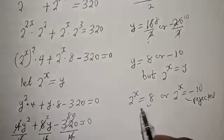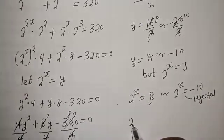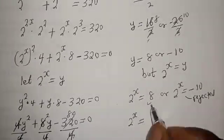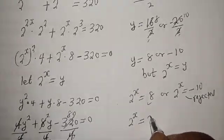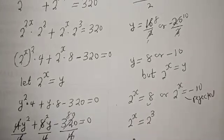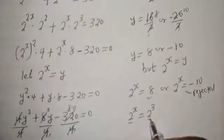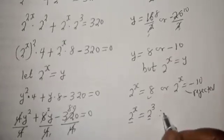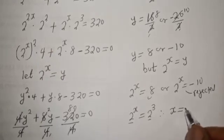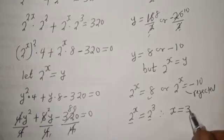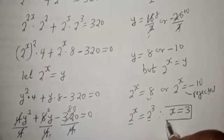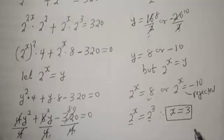We work with 2 raised to power x equals 8, which can be written as 2 raised to power 3. They have the same base 2, therefore x is equal to 3. This is the final answer.